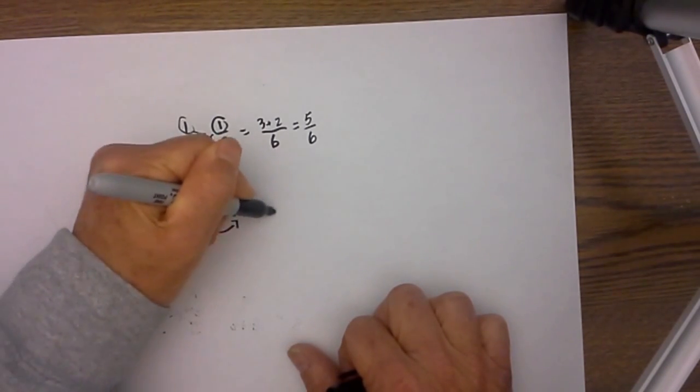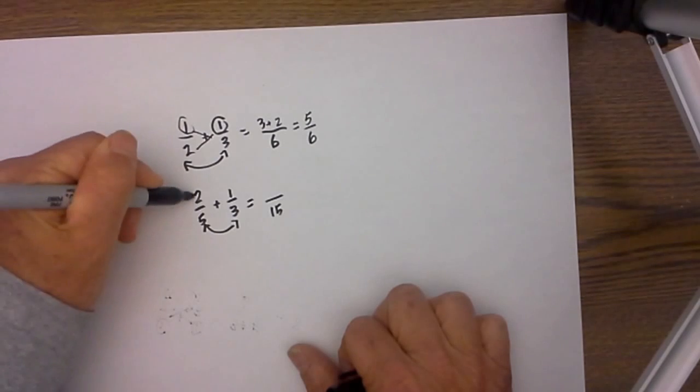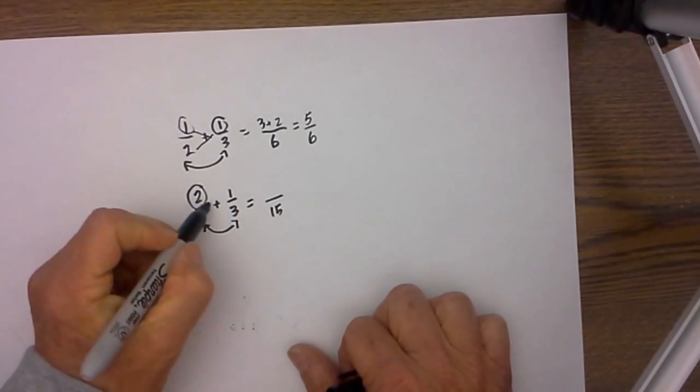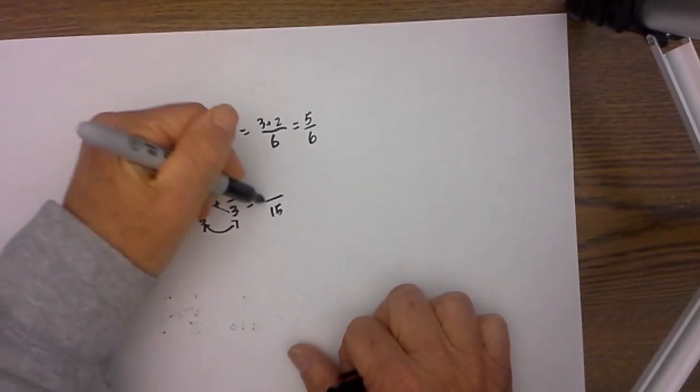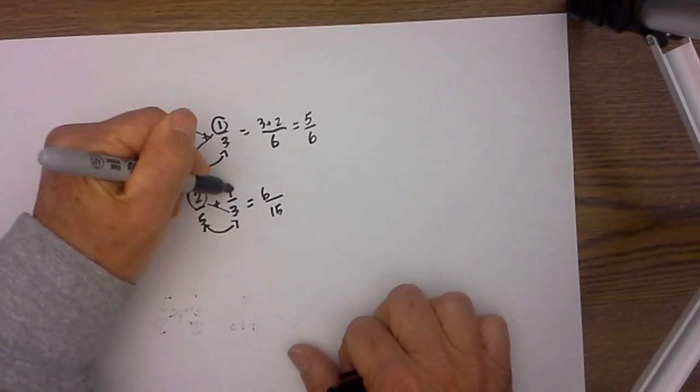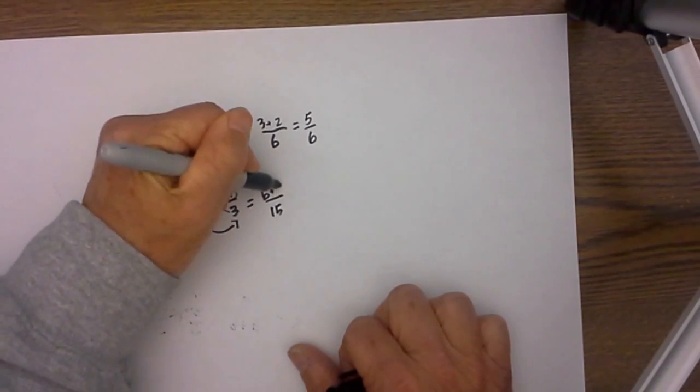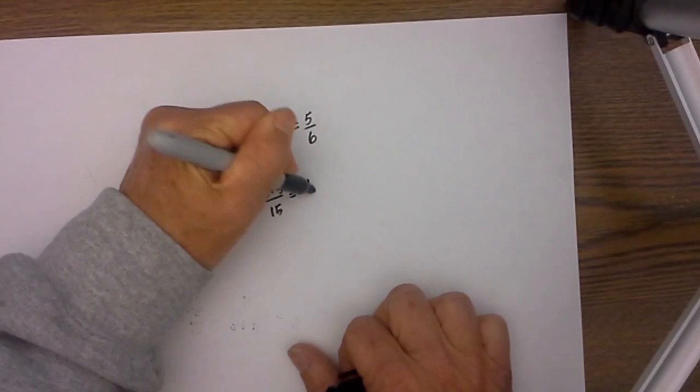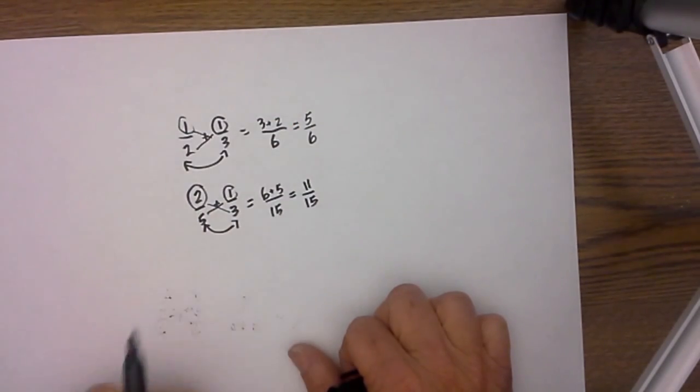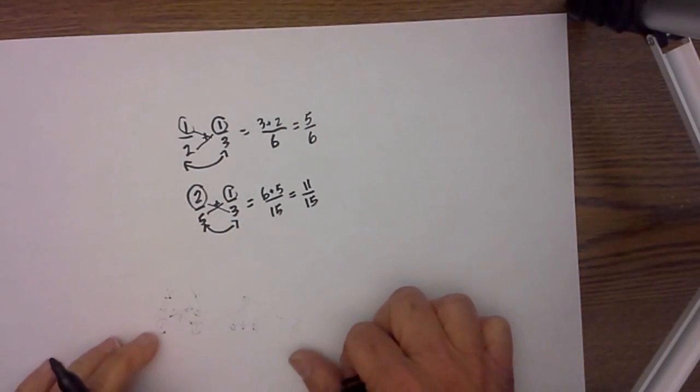5 times 3 equals 15. Always start on the left. Cross multiply. 2 times 3 equals 6. Move to the other side. 1 times 5 equals 5. That equals 11 fifteenths and you can't reduce any further.